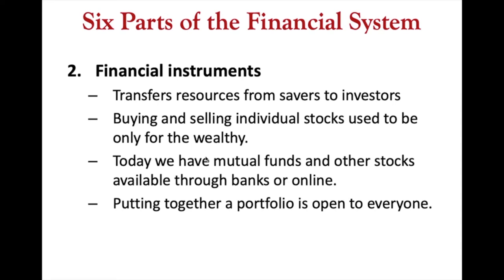The second part of the six financial systems is financial instruments. If you're a saver who has saved money and wants to invest somewhere to get some interest, your resources — in this case money — can go to a company that needs capital to expand their business. A financial instrument is what transfers resources from you as a saver to an investor. Examples of financial instruments include stocks and bonds.